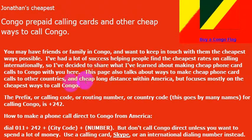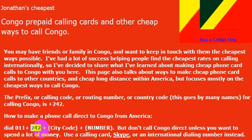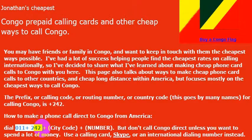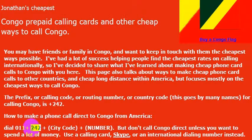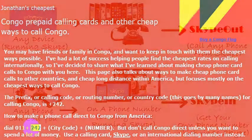If you want to call directly, all you need to do is dial the international calling code, which is 011, and then you need to know the country code for Congo, which is 242. So you would dial 011242 to get to Congo just by knowing the country code 242.